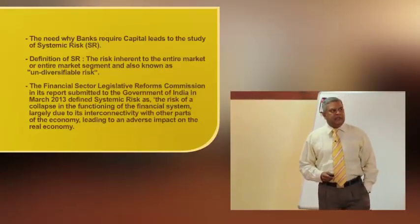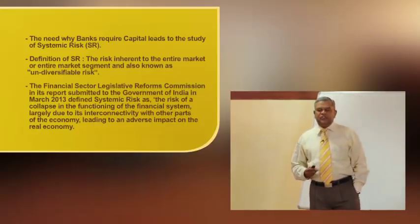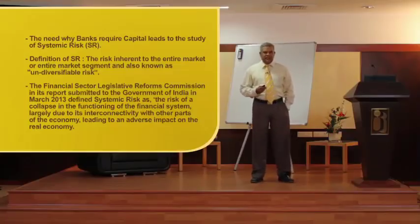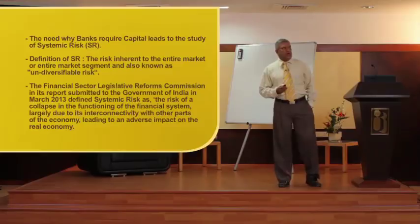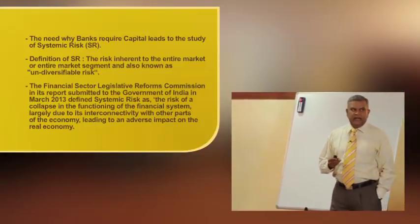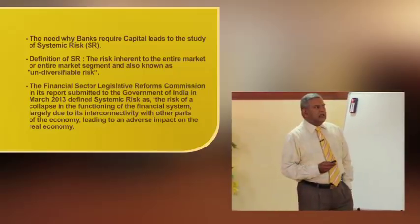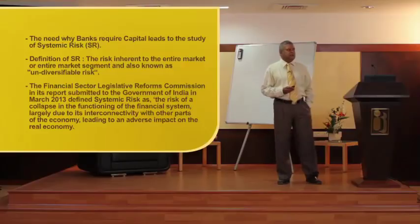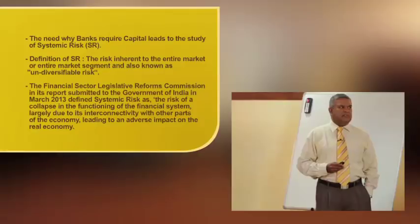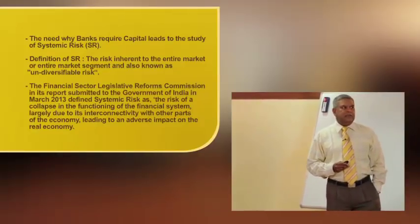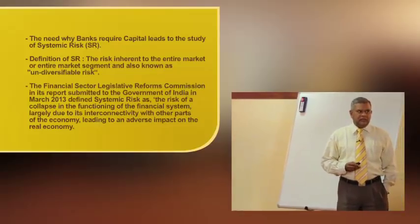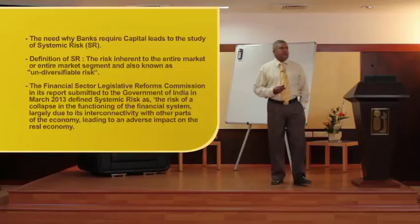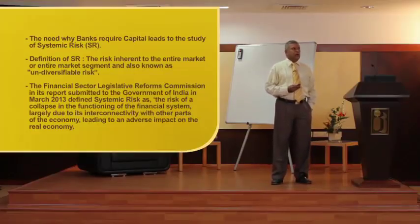The need why banks require capital leads to the study of systemic risk. The latest 2008 subprime crisis is a systemic risk. The 1997-98 Southeast Asian crisis is also such a crisis. Systemic risk is the risk inherent to the entire market or entire market segment, also known as undiversifiable risk. The Indian Financial Sector Legislative Reforms Commission defined systemic risk as the risk of a collapse in the functioning of the financial system largely due to its interconnectivity with other parts of the economy, leading to an adverse impact on the real economy. Systemic risk can be a recession, a war, or anything like a tsunami or subprime crisis because they affect the entire market and cannot be avoided through diversification.